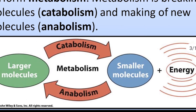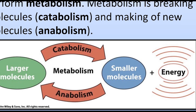Whatever food we eat gets broken down into smaller molecules — that process is called catabolism. Those molecules are then converted into our own molecules — the making of new molecules is called the anabolic process. This process continuously goes on, and the energy released from it is useful for us. This is what metabolism is, and it is the first characteristic of the living organism.